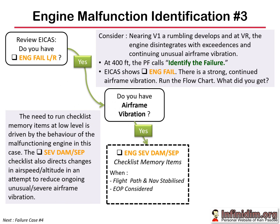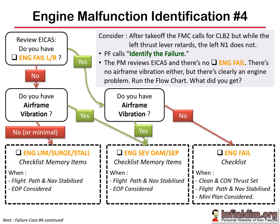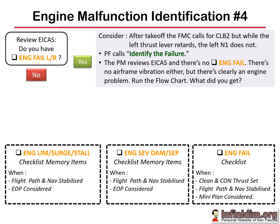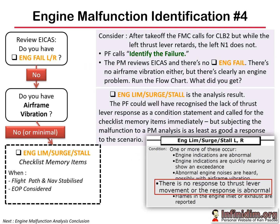Scenario 4: after takeoff, the FMC calls for a thrust reduction to climb thrust, but while the left thrust lever retards, the left N1 does not. An engine malfunction is identified. Once flight path and nav is sorted, the pilot flying calls 'identify the failure.' The PM looks at ICAS - no engine fail, no airframe vibration either - but there's clearly an engine problem. Run the flowchart: engine fail on ICAS? No. Airframe vibration? No. We end up with engine limit/surge/stall.